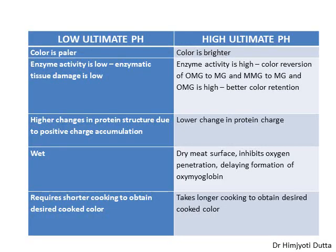However, as shown in the table, there are some disadvantages of higher pH also. The meat surface in the case of high-pH meat is dry, which does not allow oxygen to penetrate into the muscles and form the desired oxymyoglobin. Also, high-pH meat generally takes longer time to attain the cooked meat color, so you have to cook high-pH meat for a longer time to attain the cooked meat color of denatured myoglobin.